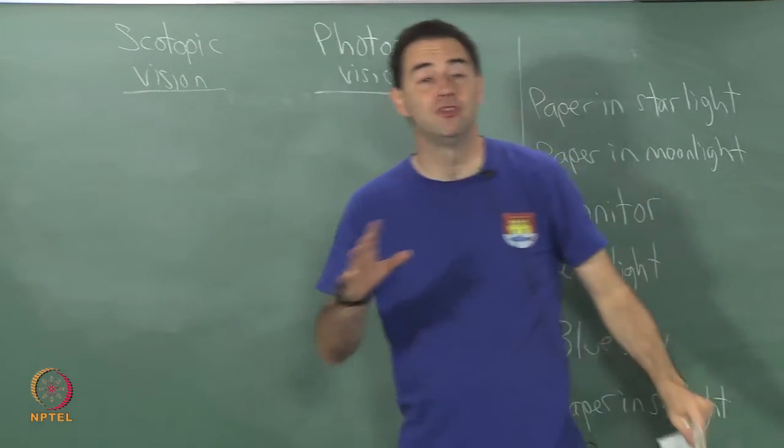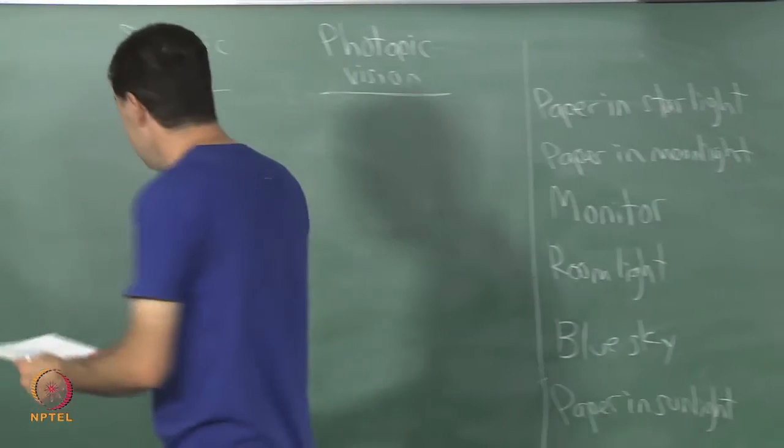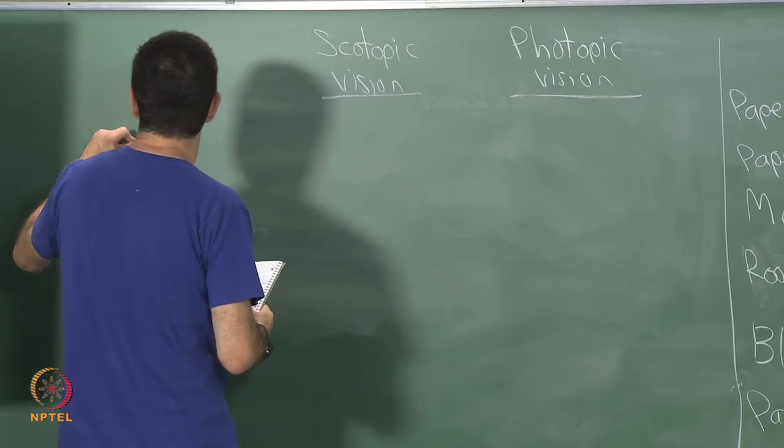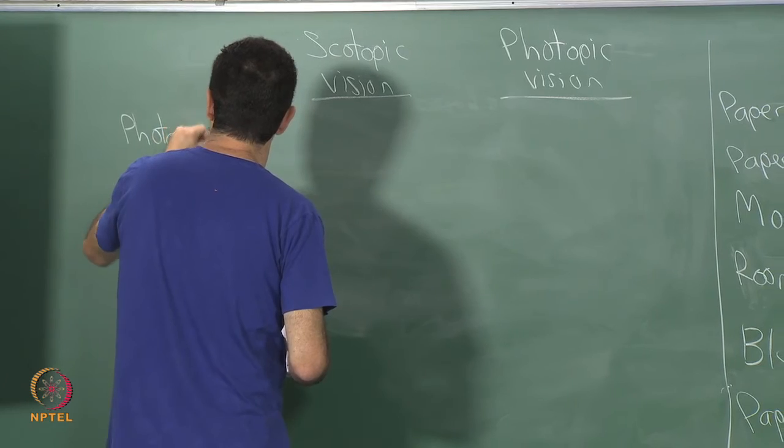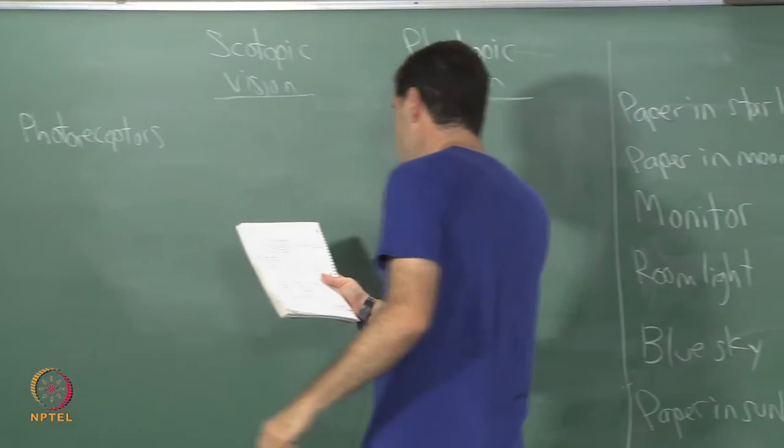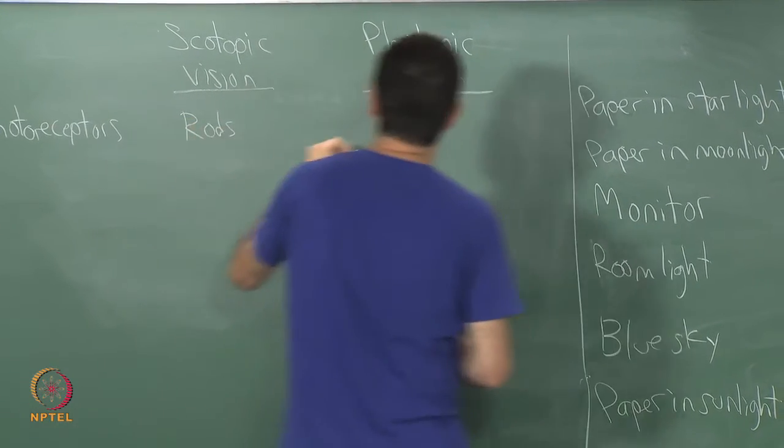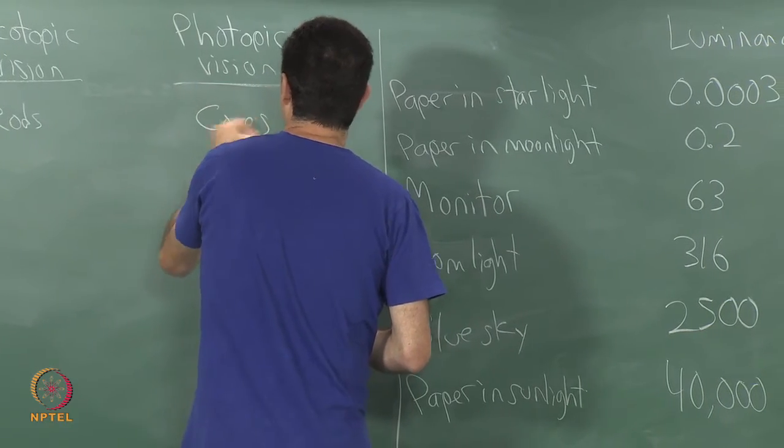These are two different modes of vision operation that we have, two different modes that our vision systems get into. The dominant photoreceptors for scotopic vision are the rods, and the dominant photoreceptors for photopic vision are the cones.